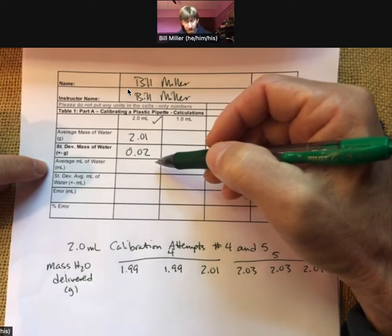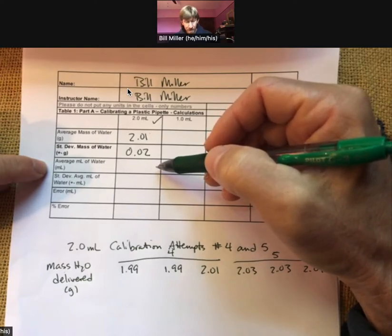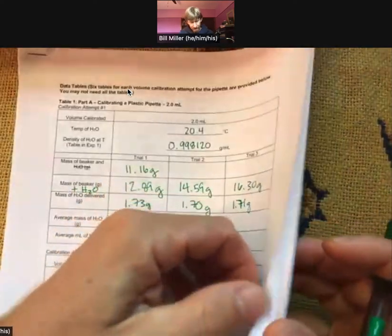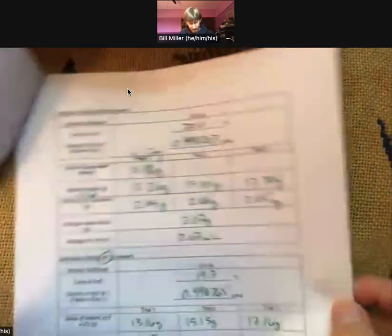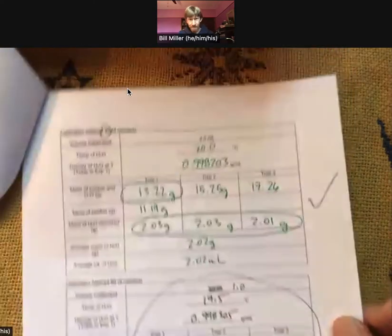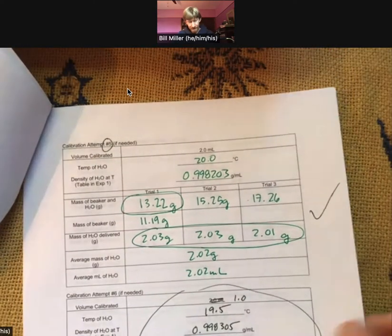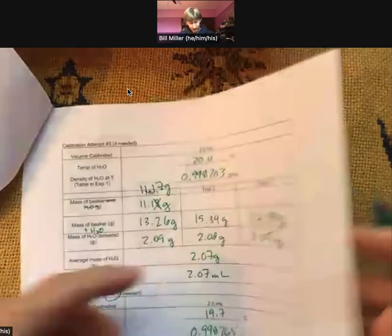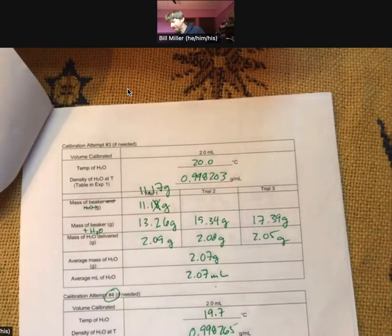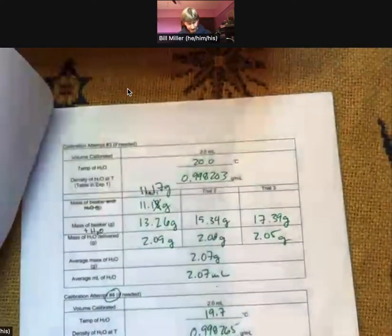Now let's go for average milliliters of water. In order to do this, we really need to look at what our density is. Our density for my values, well, my temperature was 19.7 and 20. So I'm actually going to average the two values here to get an average density. Let's see.